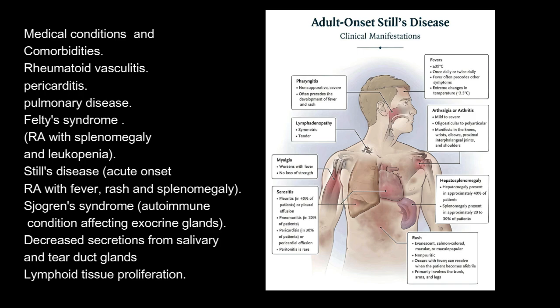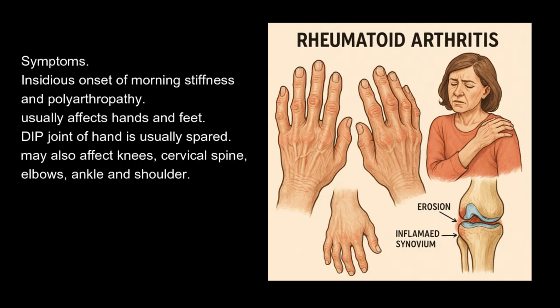Sjogren's syndrome is an autoimmune condition affecting exocrine glands, with decreased secretions from salivary and tear duct glands, and lymphoid tissue proliferation. Symptoms include insidious onset of morning stiffness and polyarthropathy, usually affecting hands and feet. The DIP joint of the hand is usually spared. May also affect knees, cervical spine, elbows, ankle, and shoulder.